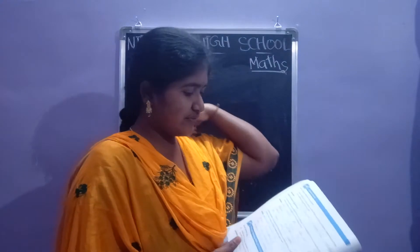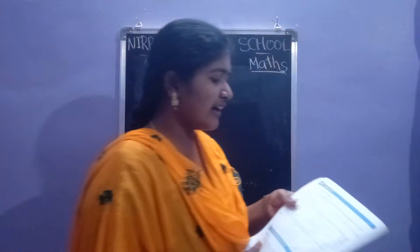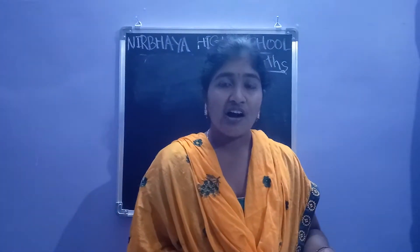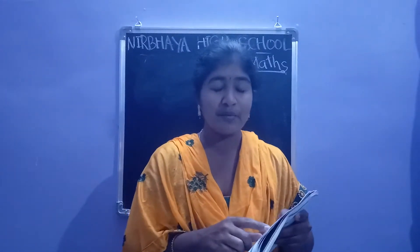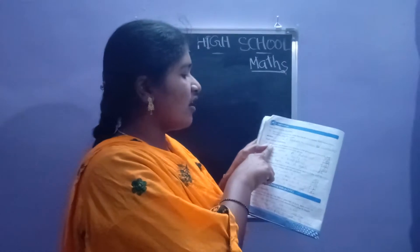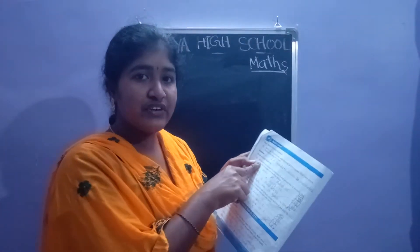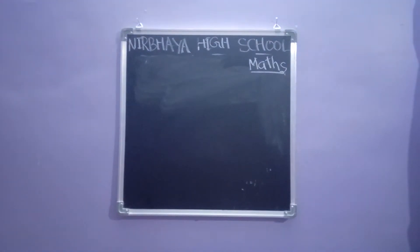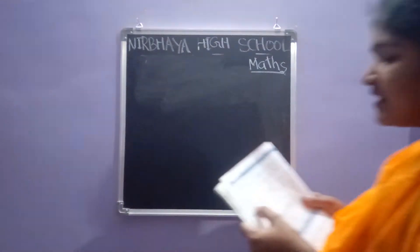Now we are entering into the sixteenth sum. These are short answer questions — word problems. I am reading the sum, children. Put your finger on the sixteenth sum and observe. 45 students are divided into two groups. If one group has 22 students, find the number of students in the other group.